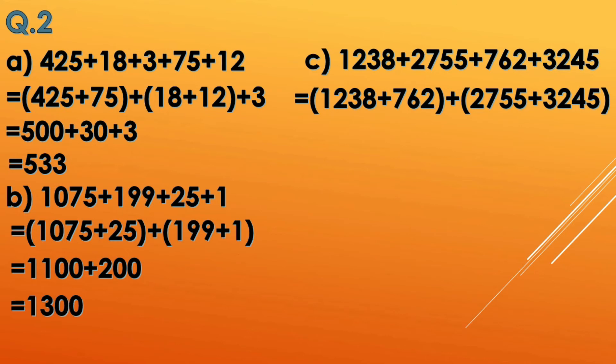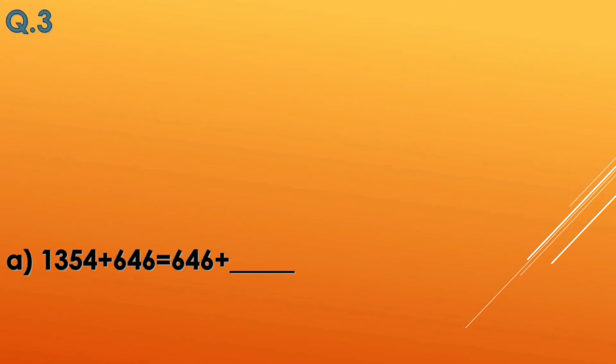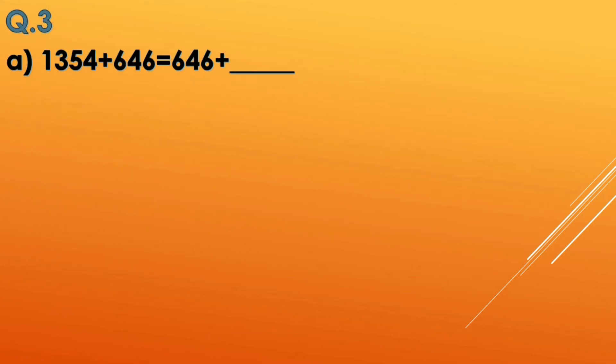In option c, we do smart pairing: 1238 pairs with 762, and 2755 pairs with 3245. Adding those pairs gives 2000 plus 6000, which equals 8000.